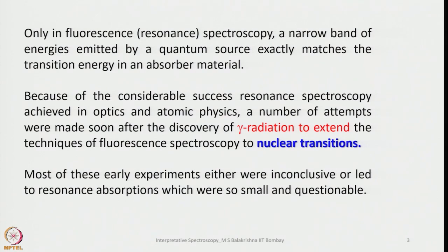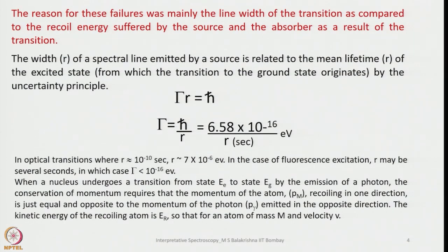Most of these early experiments either were inconclusive or led to resonance absorptions which were so small as to be questionable. The reason for these failures was mainly the line width of the transition as compared to the recoil energy suffered by the source and the absorber as a result of the transition. The width Γ of a spectral line emitted by a source is related to the mean lifetime τ of the excited state by the uncertainty principle: Γτ = ℏ.